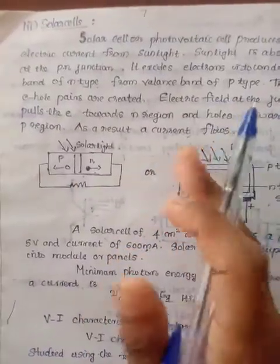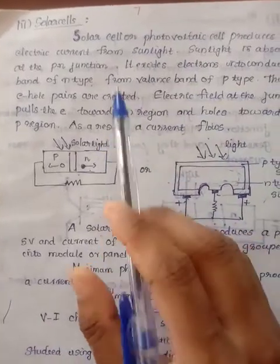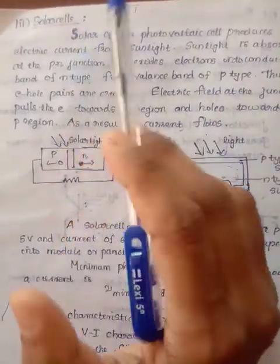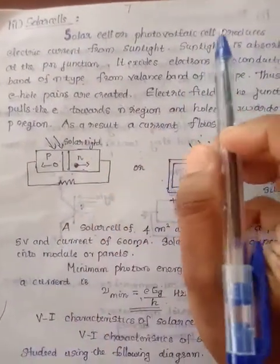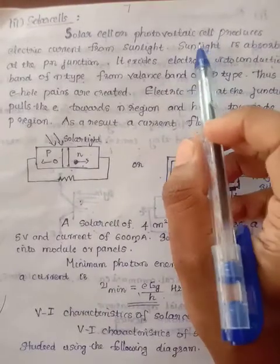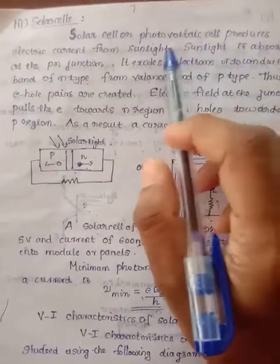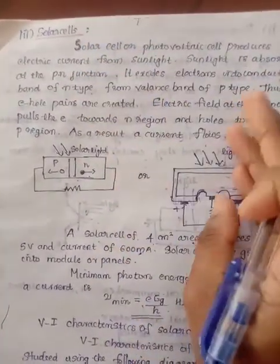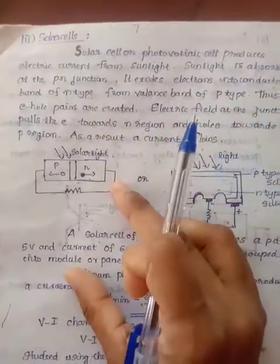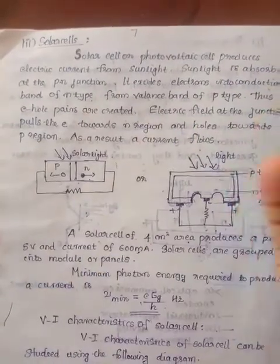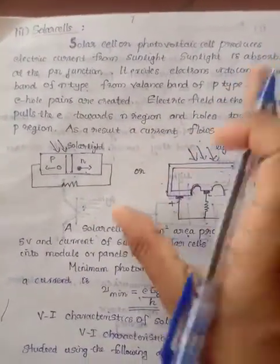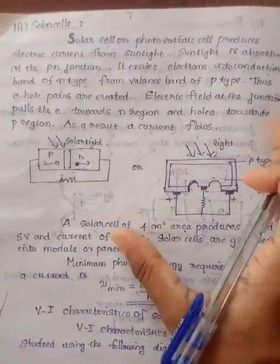The third category of photo detectives is solar cell. Solar cell is the same process. It is a photovoltaic cell which produces electric current from sunlight. Sunlight is the corresponding current generated in the solar cell.